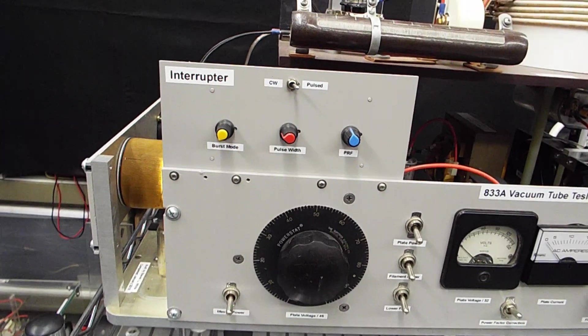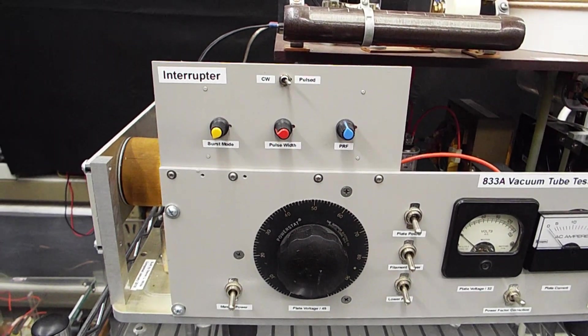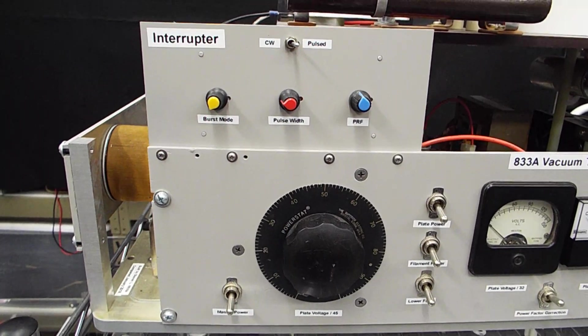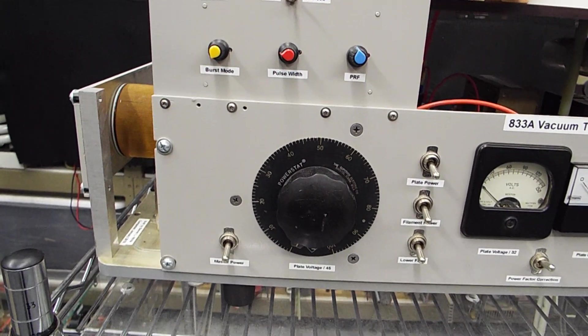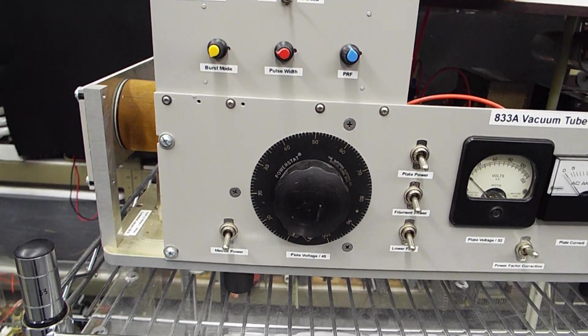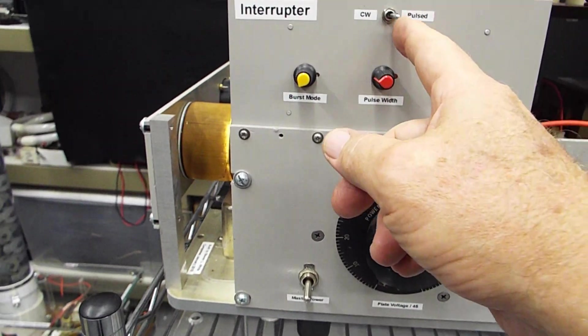This is what I can use to vary the pulse width and the pulse repetition frequency of the coil. I can also operate it in CW mode by flipping the switch.